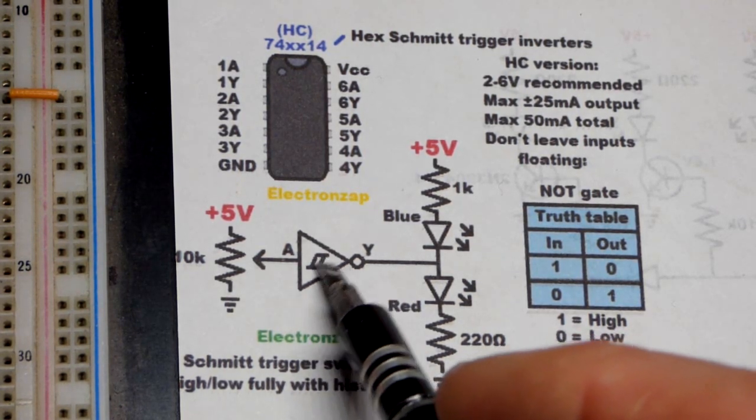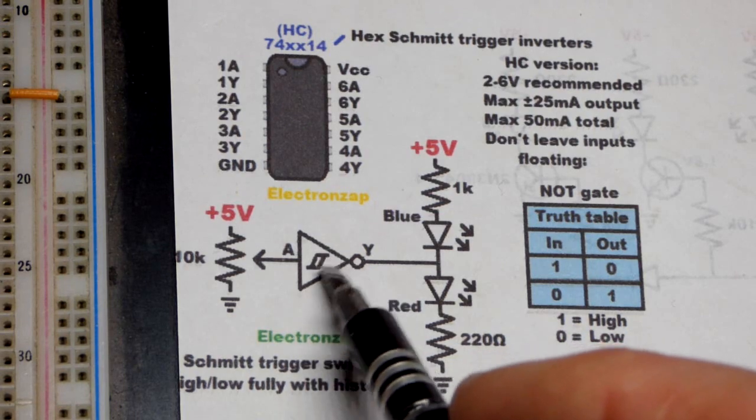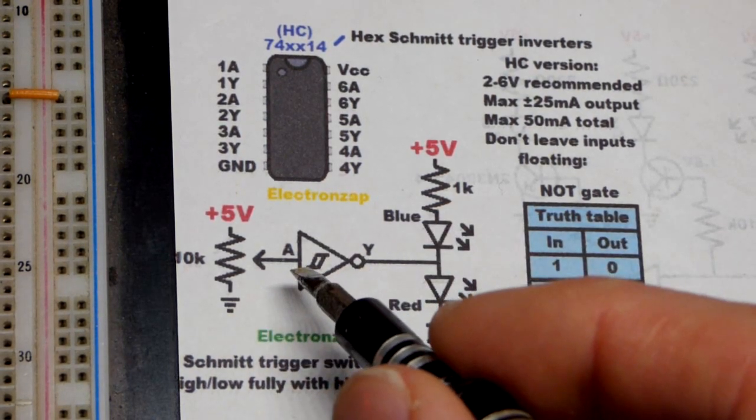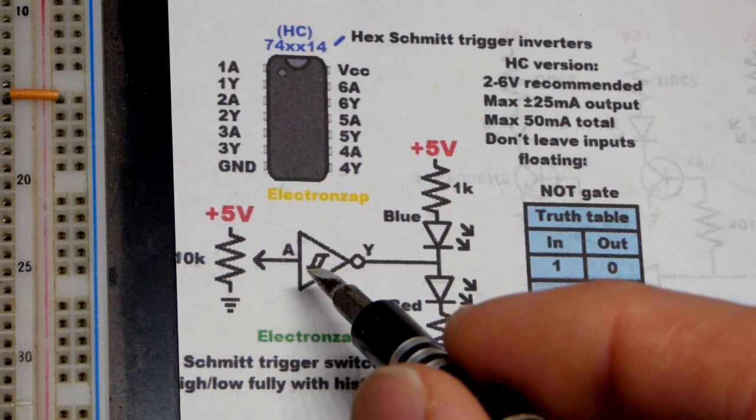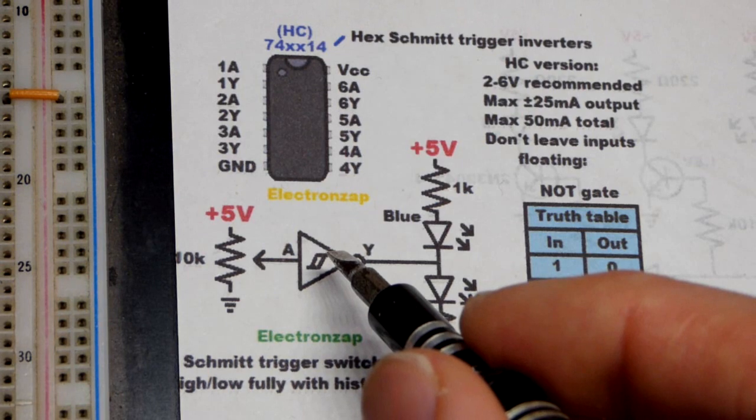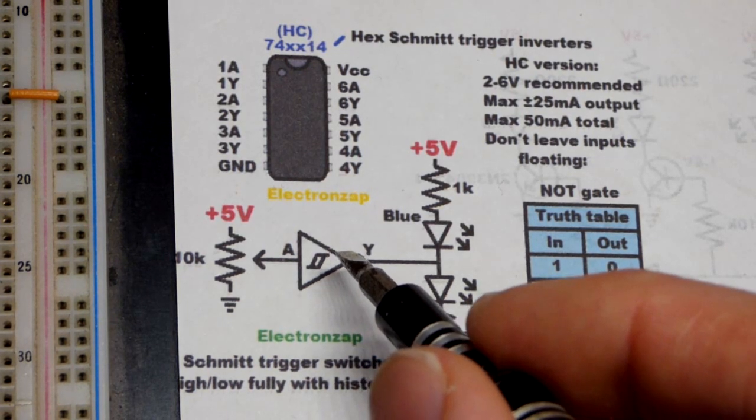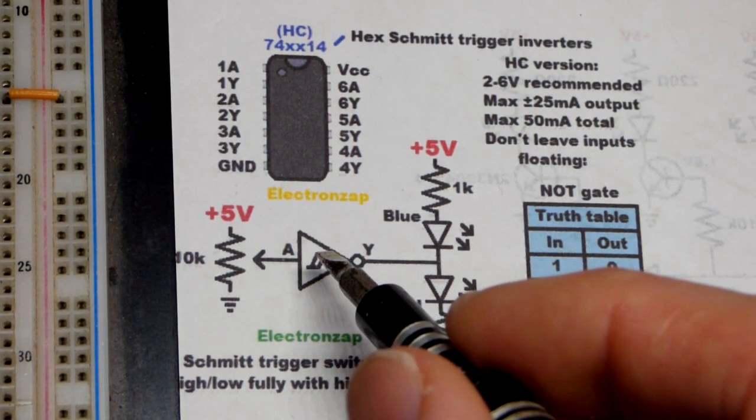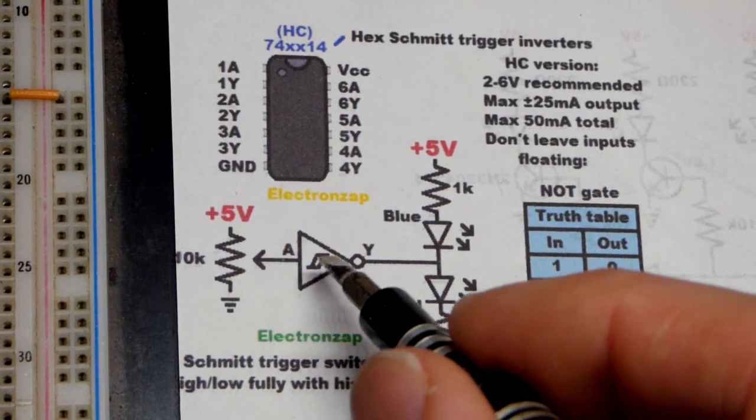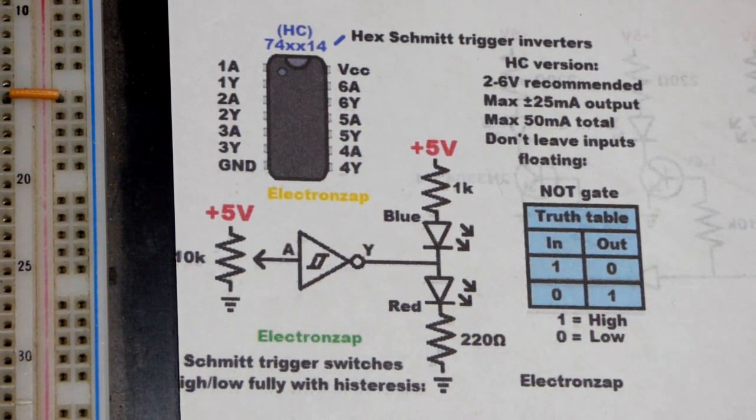But any case, we have this little symbol there. That's the Schmitt trigger symbol there. I don't know what the name is for it. But you can see, you can think of it if you're down low and you're raising the voltage, you gotta get to a certain point before the output will jump into the other state. But then you gotta go lower to make your way back before it will jump back down. So you can kind of see the Schmitt trigger effect there.